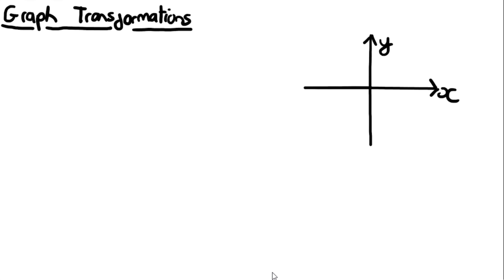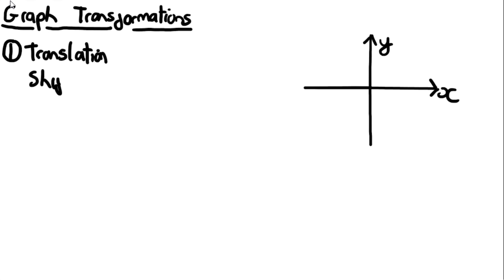This video is on graph transformations — this is GCSE revision. There are three types of transformations that we're going to go through that you need to know, and these are the same transformations that you learn at GCSE. The first transformation is a translation, and this is when we shift the graph by a set value. There are two types: outside the function translation and inside the function translation.